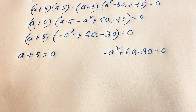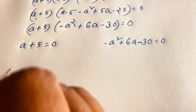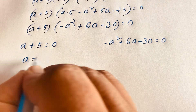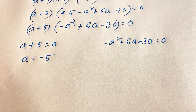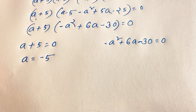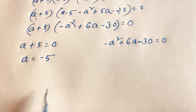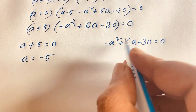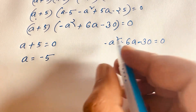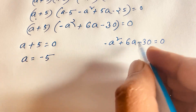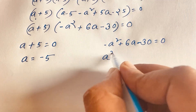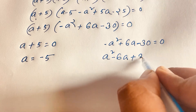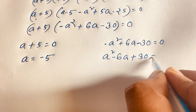In the first case, a plus 5 equals 0, so a is equal to negative 5. In the other case, minus a squared plus 6a minus 30 equals 0. If we multiply both sides by minus 1, we get a squared minus 6a plus 30 is equal to 0.